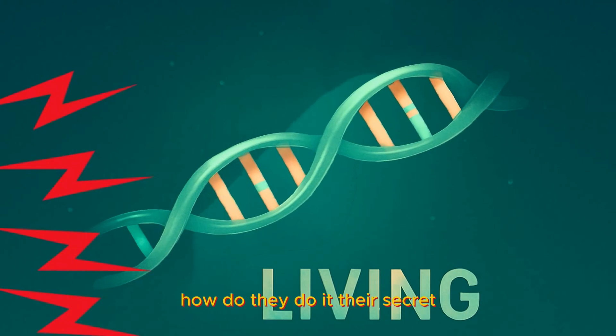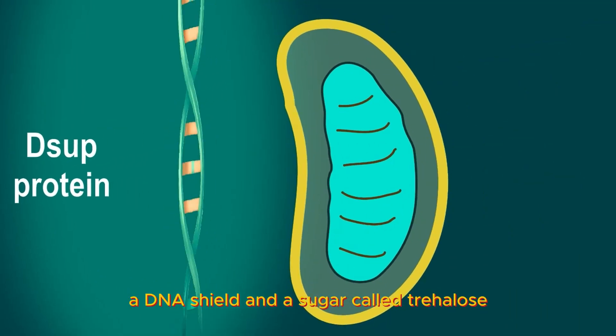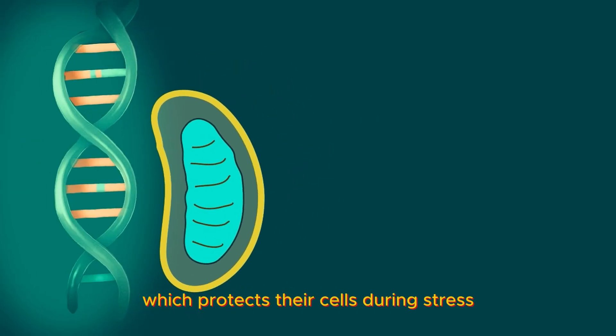How do they do it? Their secret: a special protein called D-SUP, a DNA shield, and a sugar called trehalose, which protects their cells during stress.